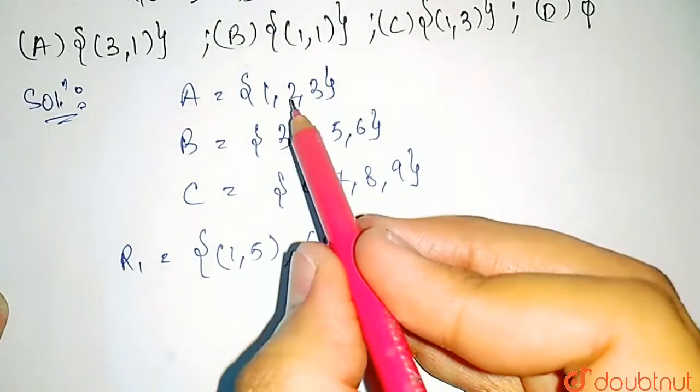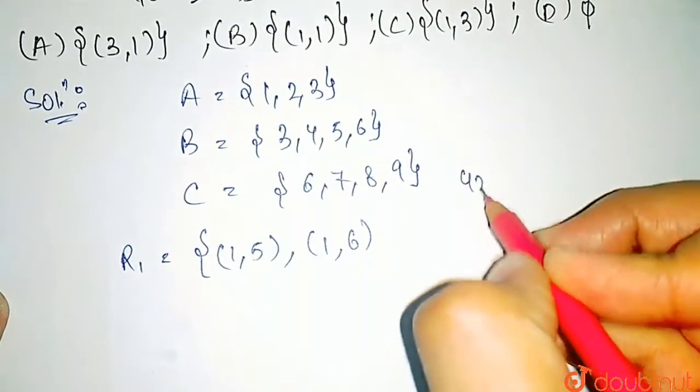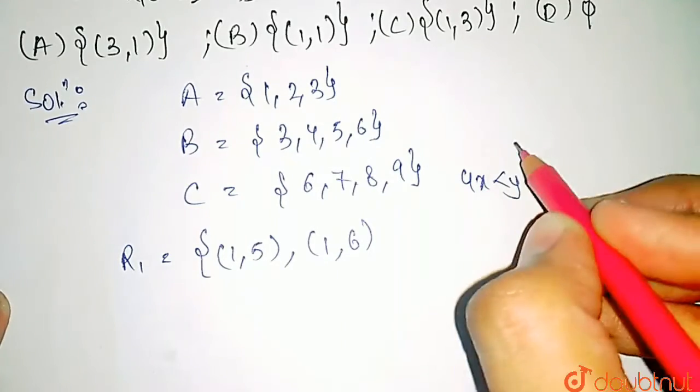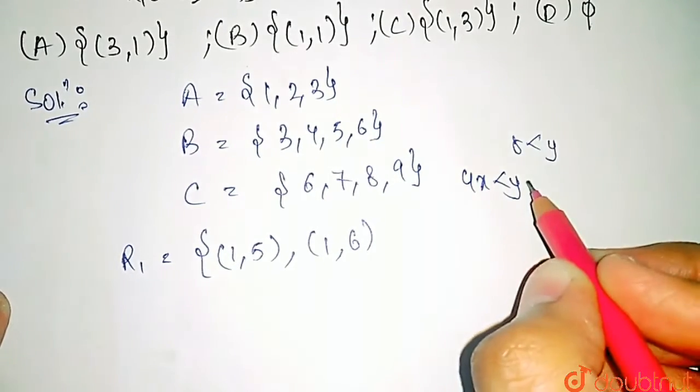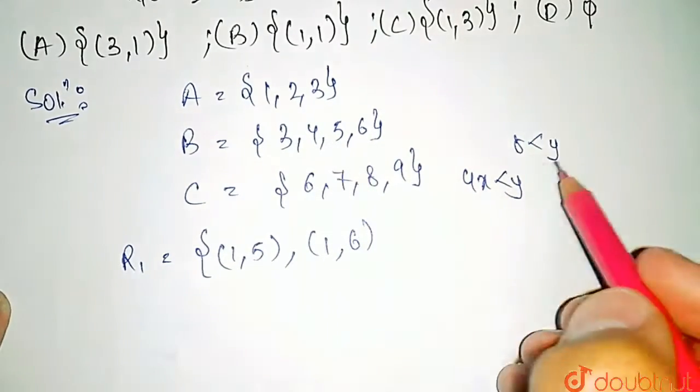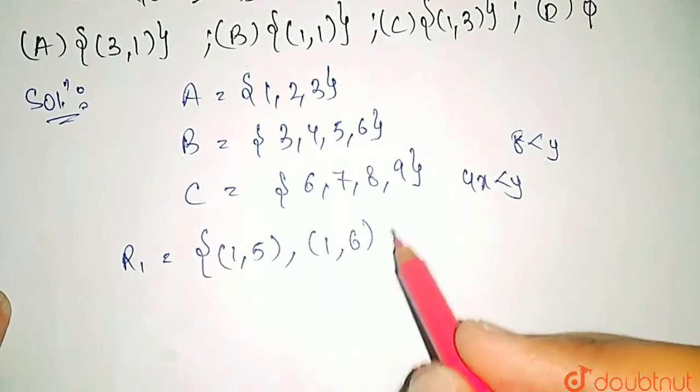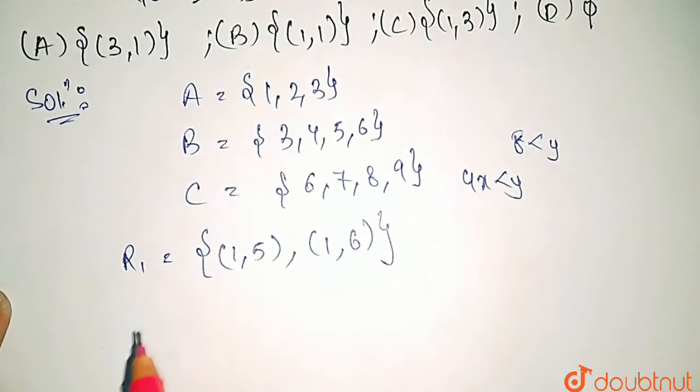Now if we take x equals 2, since 4x < y, if we take x equals 2, here we will get 8 < y. So there is no y in B which is greater than 8. So no other elements are possible. This much is R1.